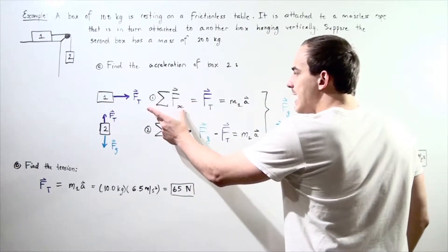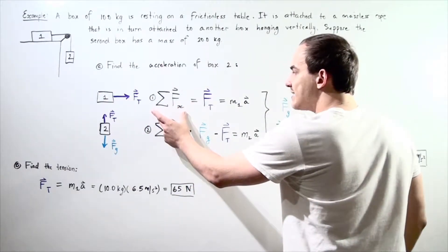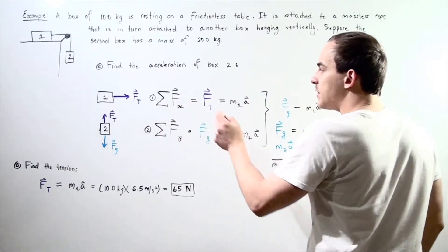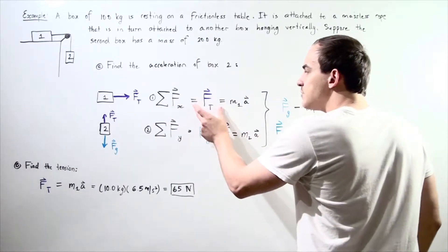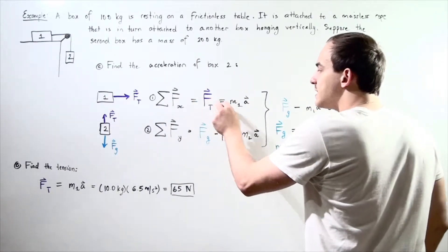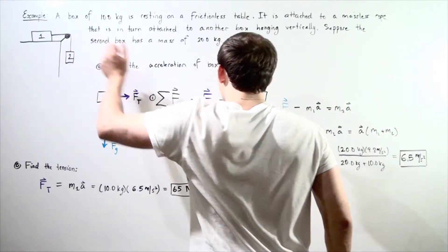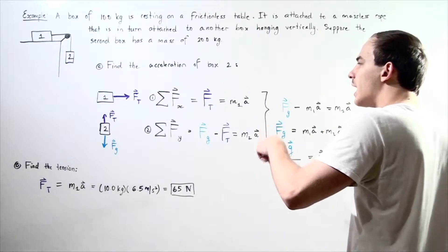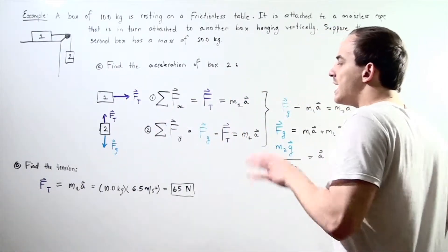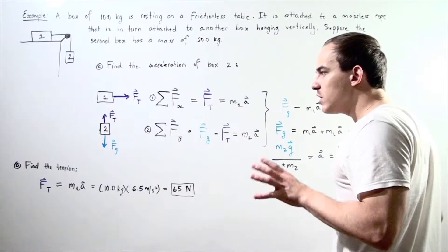Taking the sum of all forces along the x-axis, we see that this equals the tension in the rope, which equals the mass of box one (m₁) multiplied by the acceleration (a). Now let's examine the force diagram for box number two, which has a mass of 20 kilograms.